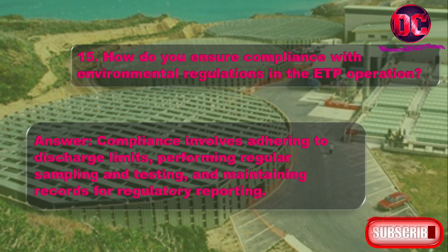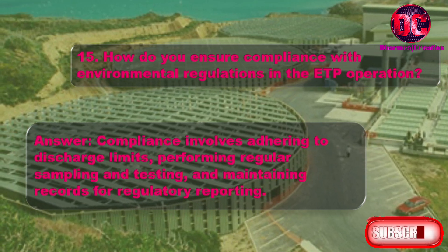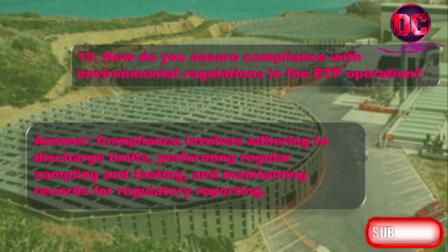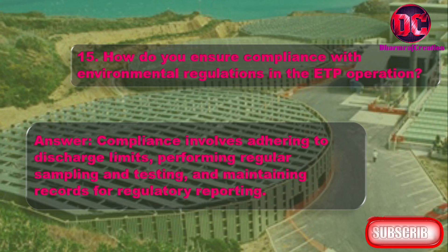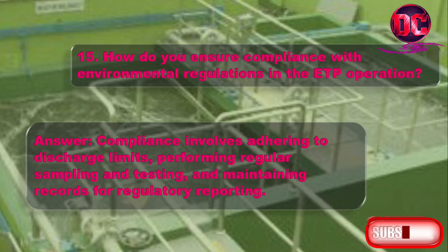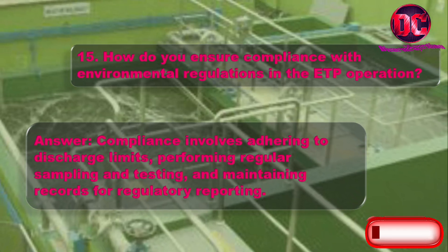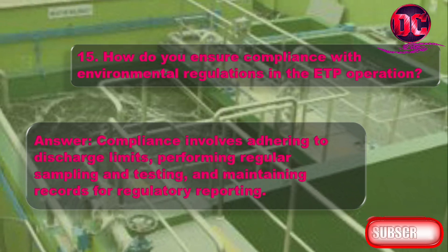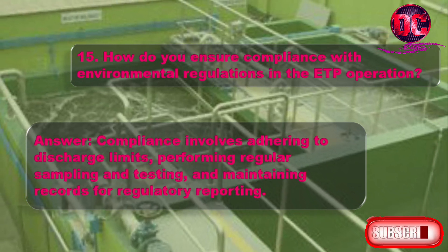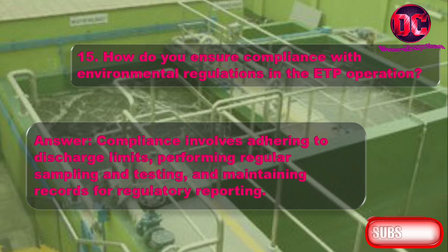15. How do you ensure compliance with environmental regulations in ETP operation? Answer: Compliance involves adhering to discharge limits, performing regular sampling and testing, and maintaining records for regulatory reporting.